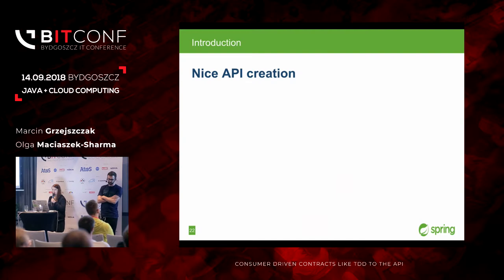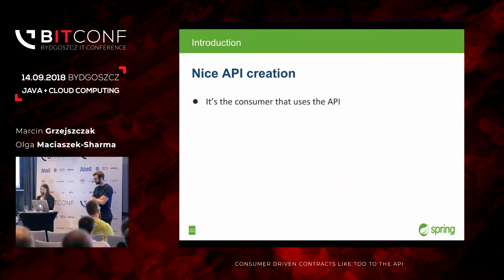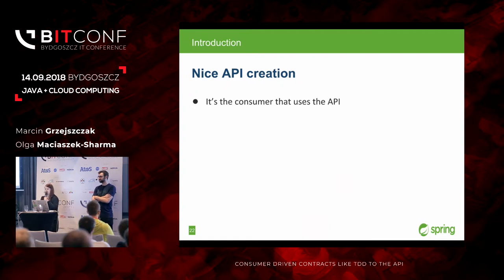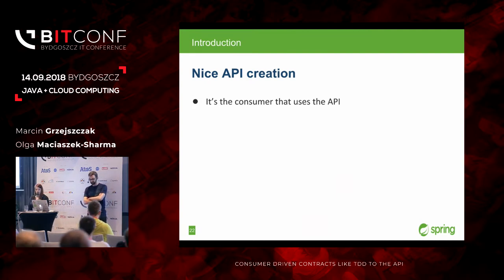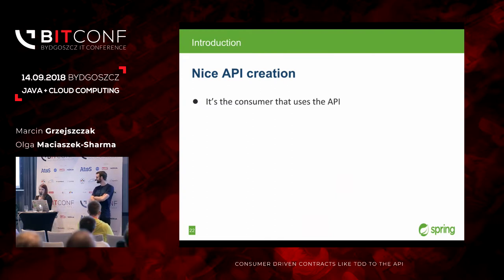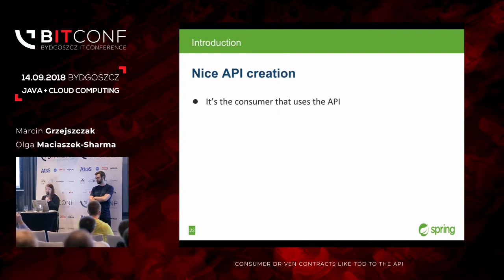The second topic is nice API creation. Very often what happens is the team that develops the producer app works on the API and says 'I will return this object, this looks good to me, I have it in the database, let's just pass it on.' But who really uses the API is the consumers — they are going to live with it and write code around it. They know better which format of data they need. It happened to me when I was writing both consumer and producer — I started with the producer and then writing the consumer thought 'why have I done it this way?'